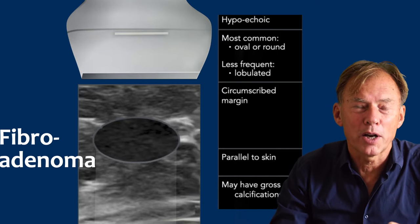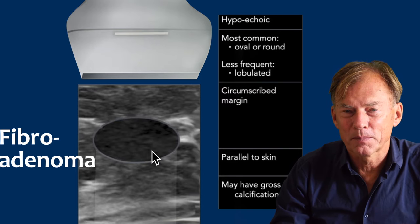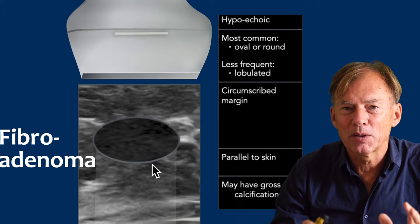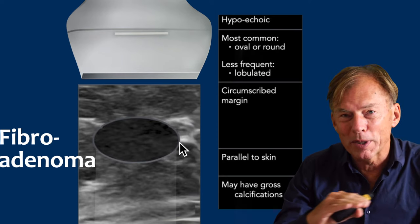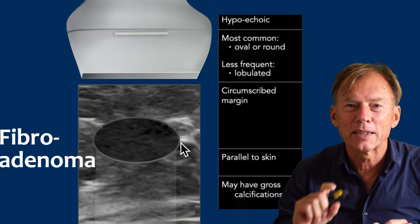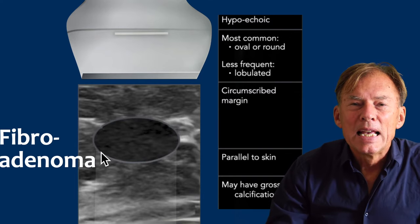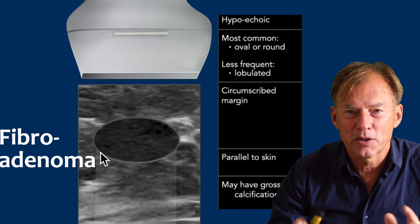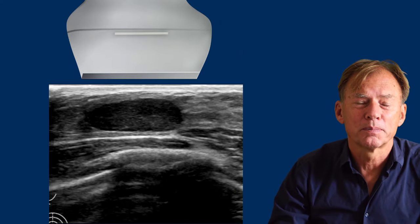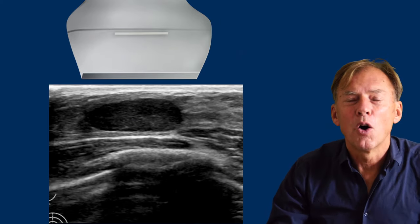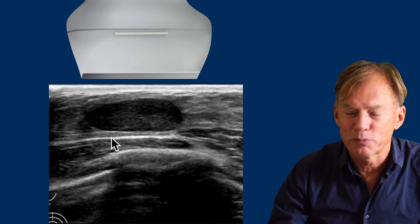Next is a fibroadenoma. The typical ultrasound features are a hypoechoic pattern, oval shape — sometimes round with two or three lobulations. The orientation is also parallel to the skin, so it's wider than tall. It has a sharp border, also called circumscribed margin. Blood flow within small vessels can sometimes be detected on color Doppler. Sometimes there's a little bit of posterior enhancement. Here is a typical fibroadenoma: oval shape, horizontal orientation, sharp border, and maybe a little bit of posterior enhancement.